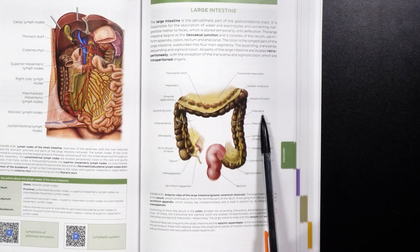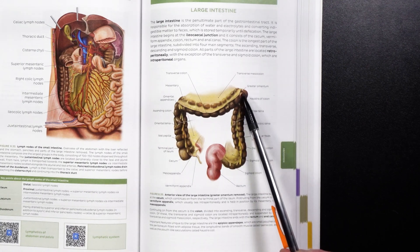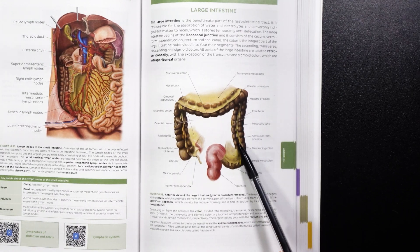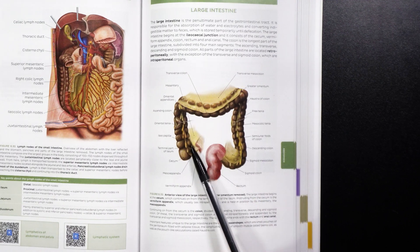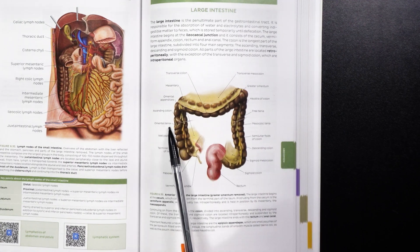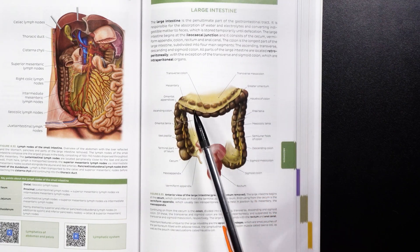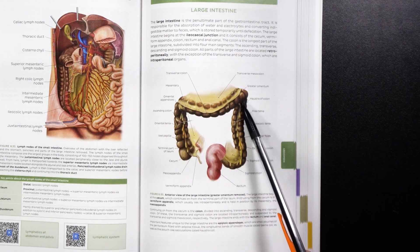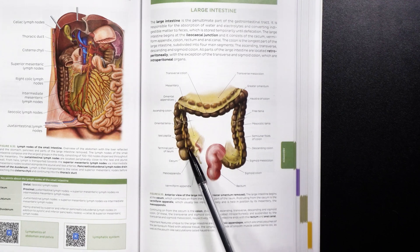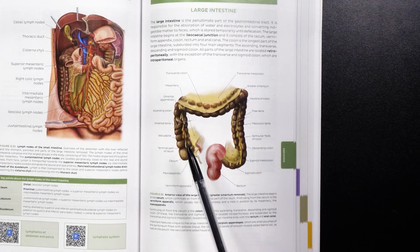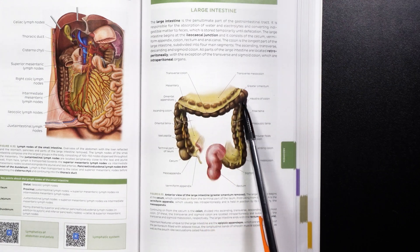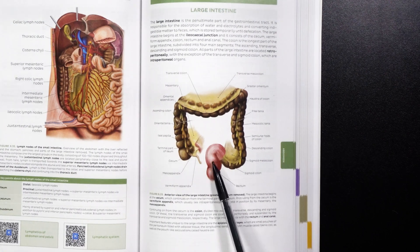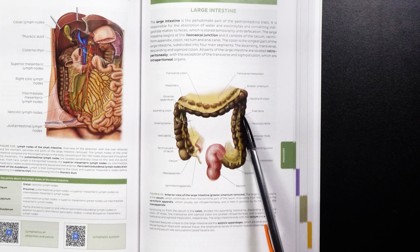How does feces actually move? That's where we talk about the teniae. There are three different types: the free tenia, which is going to be right here on the anterior side; the mesocolic tenia, on the medial aspect; and the omental tenia, on the lateral aspect. These are actually smooth muscle bands that contract and move to help propel the fecal matter up from the cecum through the ascending colon, transverse colon, descending colon, and sigmoid colon. There are no teniae inside of the rectum — only in the rest of the large intestine.